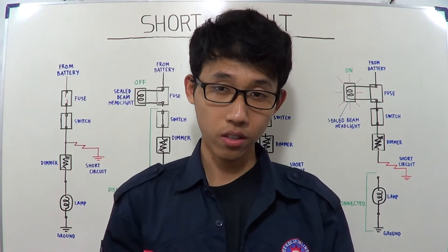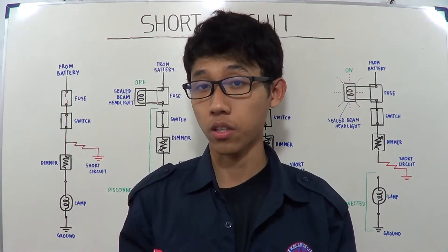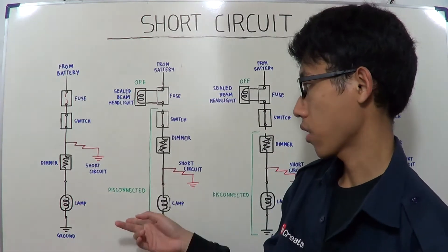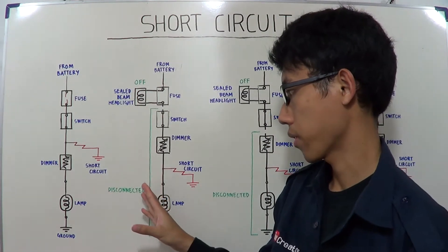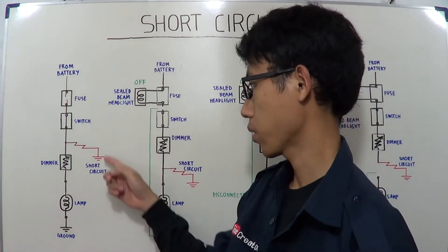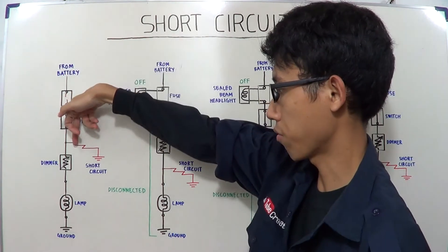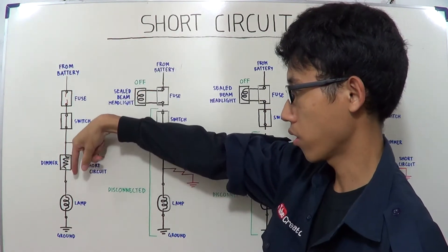The short circuit is an unwanted path of electric current from the battery. For example, in this diagram or illustration, it's a short circuit between the switch and dimmer. Thus, the electric current from the battery doesn't flow to the lamp or load.